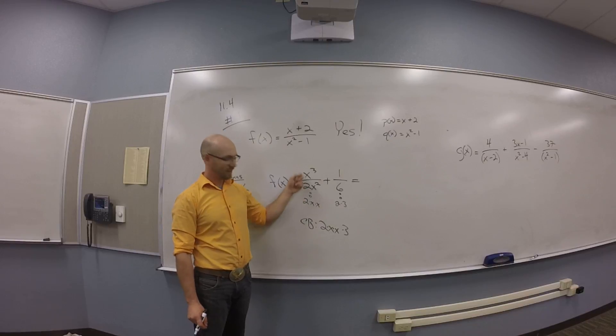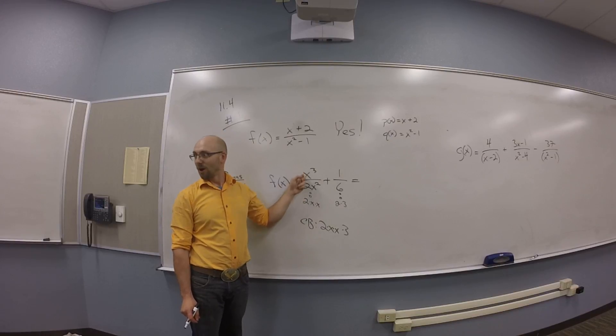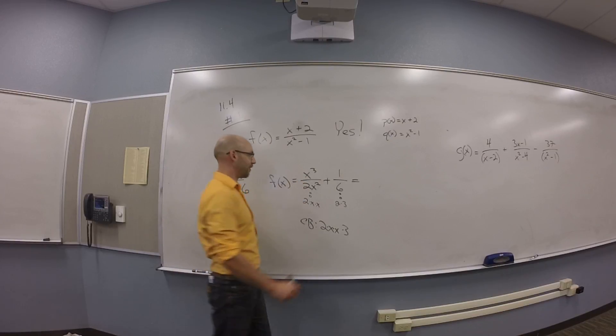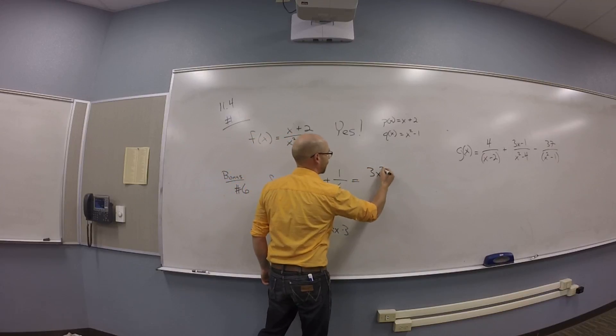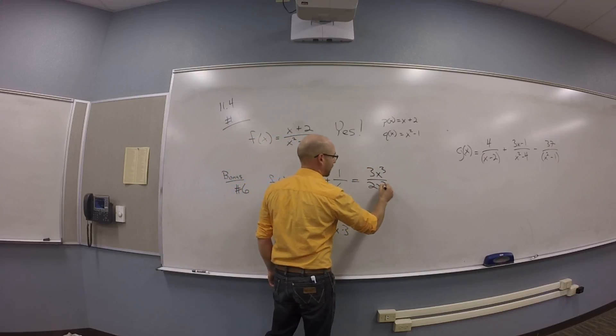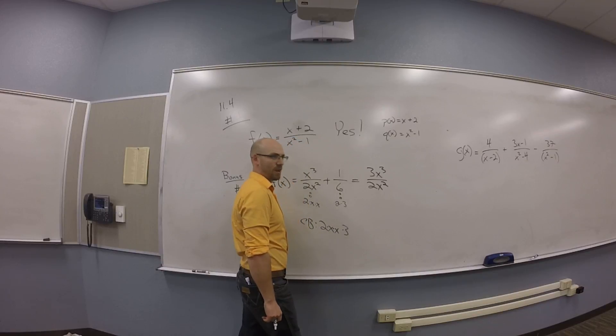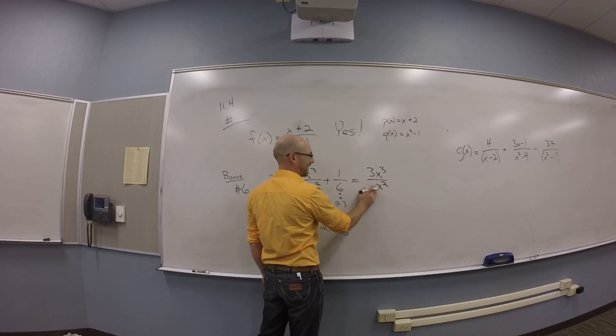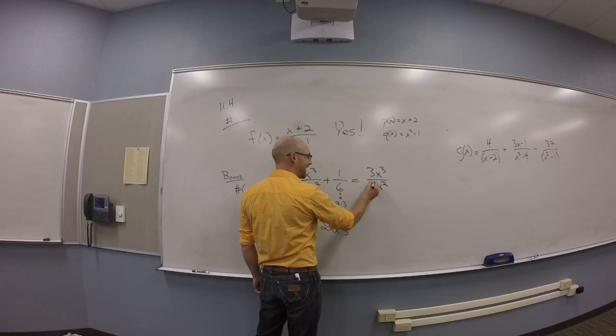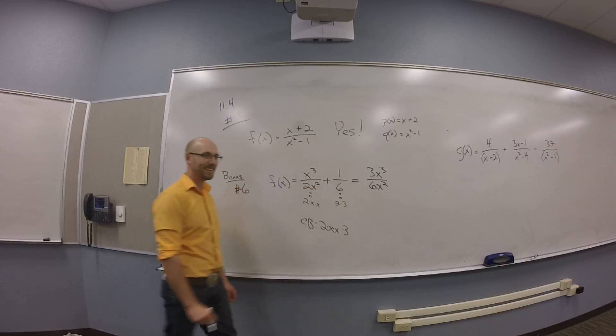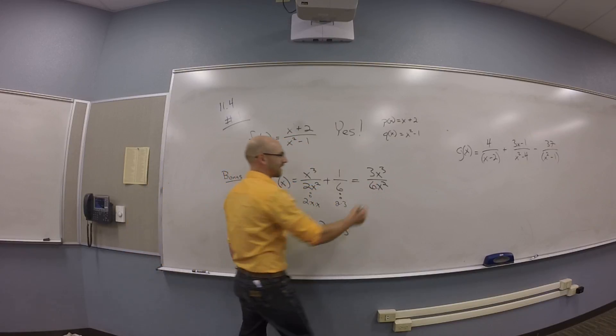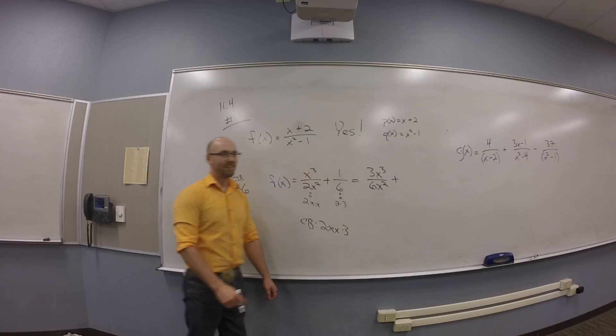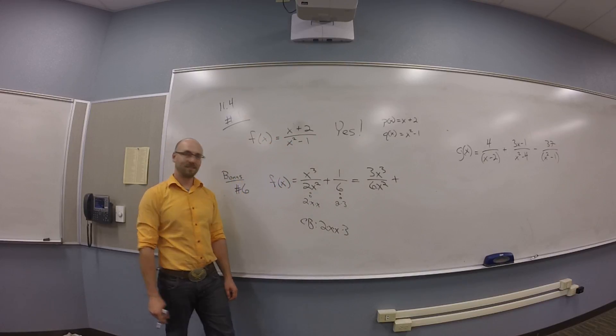What does this guy need? That one needs a 3. So you got 3X cubed over 2X squared. So you can multiply the top by 3, not do anything at the bottom. And then the other guys. Just kidding. You need an X squared. Top and bottom.